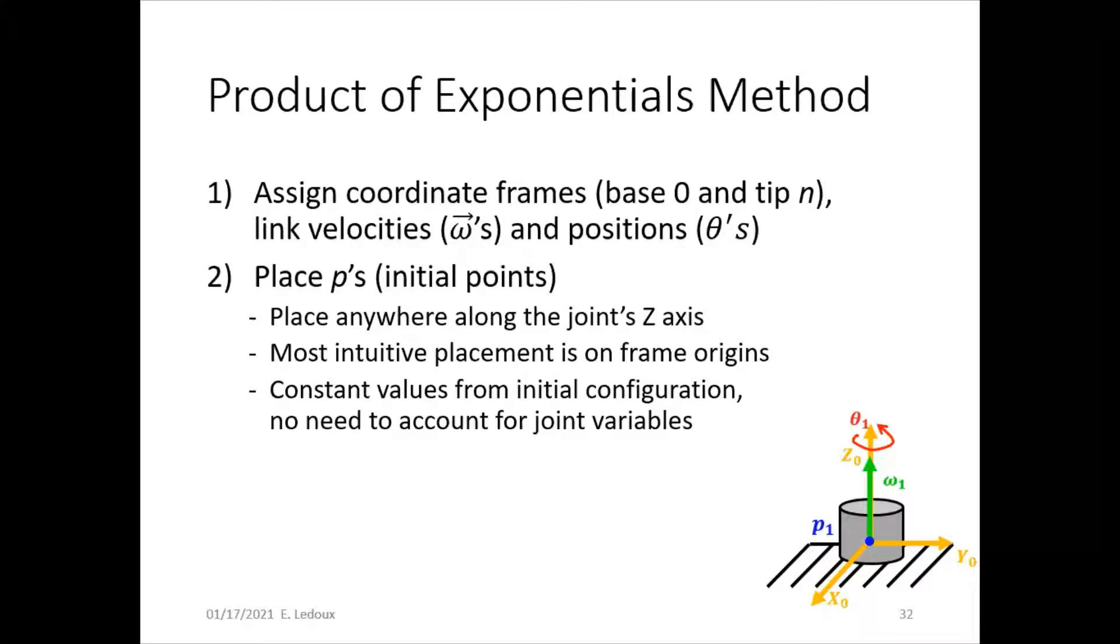Then assign the p's, which is initial points. The most intuitive place to put these is on the origin of each coordinate frame, but they can be placed anywhere along the z-axis of the joint. There are constant values from the initial configuration, so you don't need to account for joint rotation or translation. Just write down those coordinates in the robot's initial configuration.